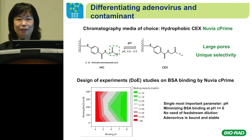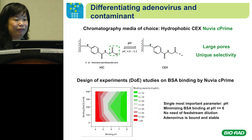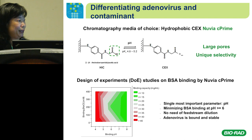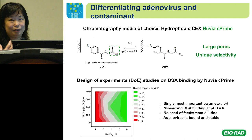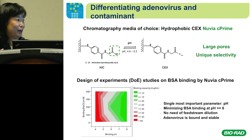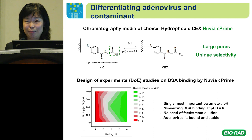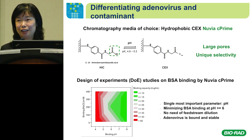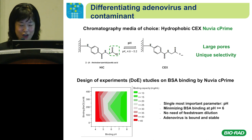A quick DOE was used to differentiate the target virus from the contaminant, looking at the effect of buffer pH and binding buffer conductivity — sodium chloride concentration. We found the most important parameter is feed pH. At pH 6 and above, we didn't see much binding of the contaminant, and you can have quite high salt concentration in the feed and still have the target virus bound by the mixed-mode resin. That means you don't have to dilute or do diafiltration to reduce the conductivity of the feed — the target still binds effectively.